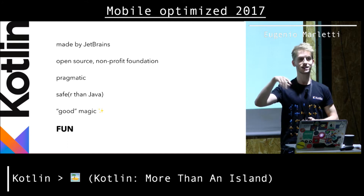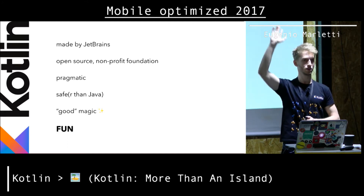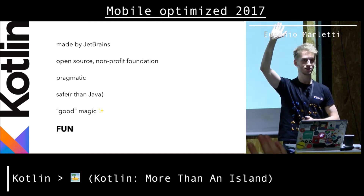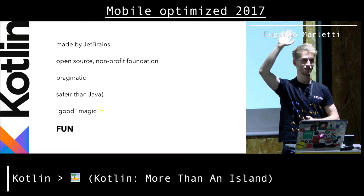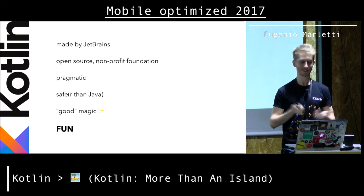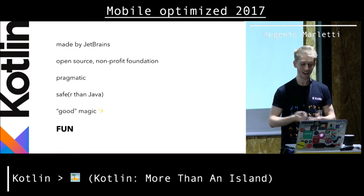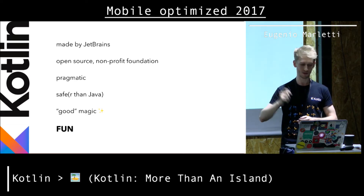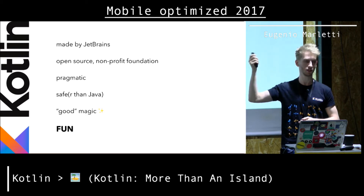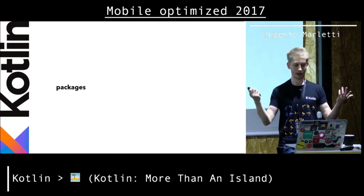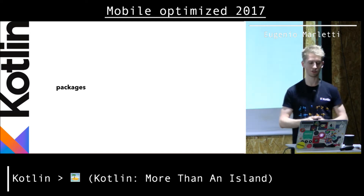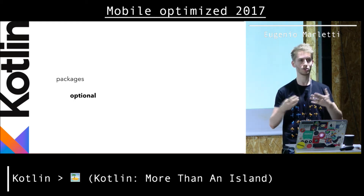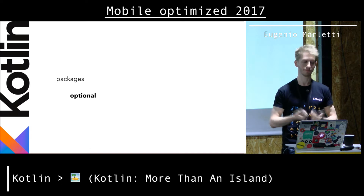I'll quickly go through some syntax usages, very briefly, because most of you are probably familiar with it. But mostly I'll explain why it makes sense to use these features in Kotlin. Packages are the first thing that shows the freedom of Kotlin. They're optional, first of all, which is probably something you don't want to do because you might encounter clashes in signatures. They do not need to match a folder, which is actually really useful.